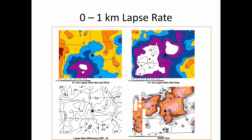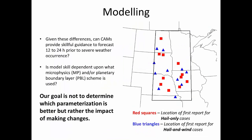The other difference was the low-level lapse rate. Now, these are not lapse rates you would expect to see during the afternoon during the convective season. But overnight, these lapse rates proved to be statistically significant. In the hail and wind cases, we had steeper low-level lapse rates in the zero-to-one kilometer layer than in the hail-only cases, especially downstream. So we wanted to ask: given these differences in the pre-storm environment, can convection-allowing models provide useful skill in forecasting these differences 12 to 24 hours in advance? And was that skill dependent on the microphysics and/or planetary boundary layer scheme used? Our goal was not to determine which parameterization was best, but just what the impact was if we changed it.